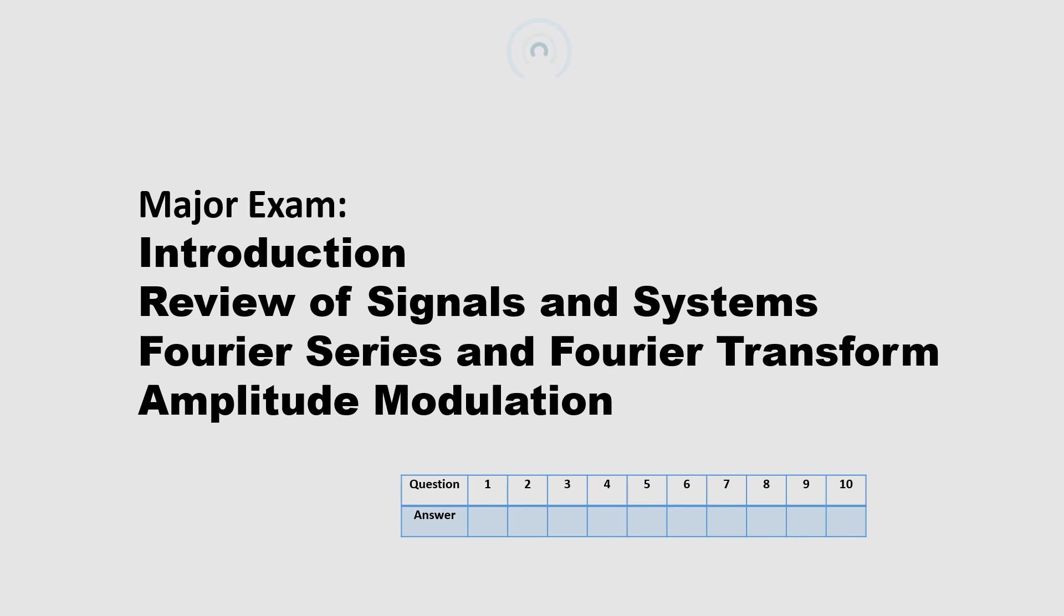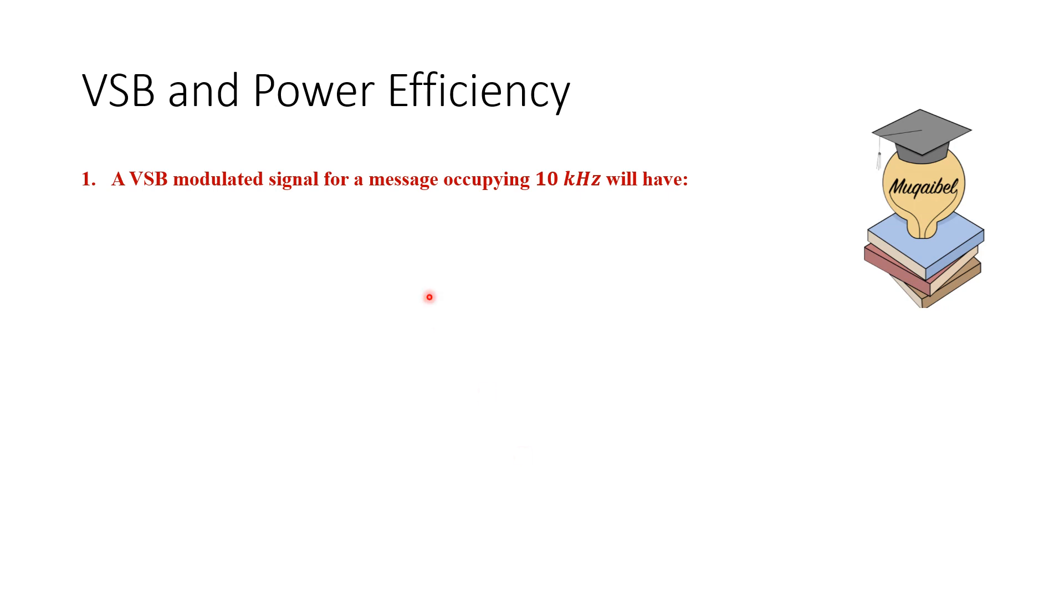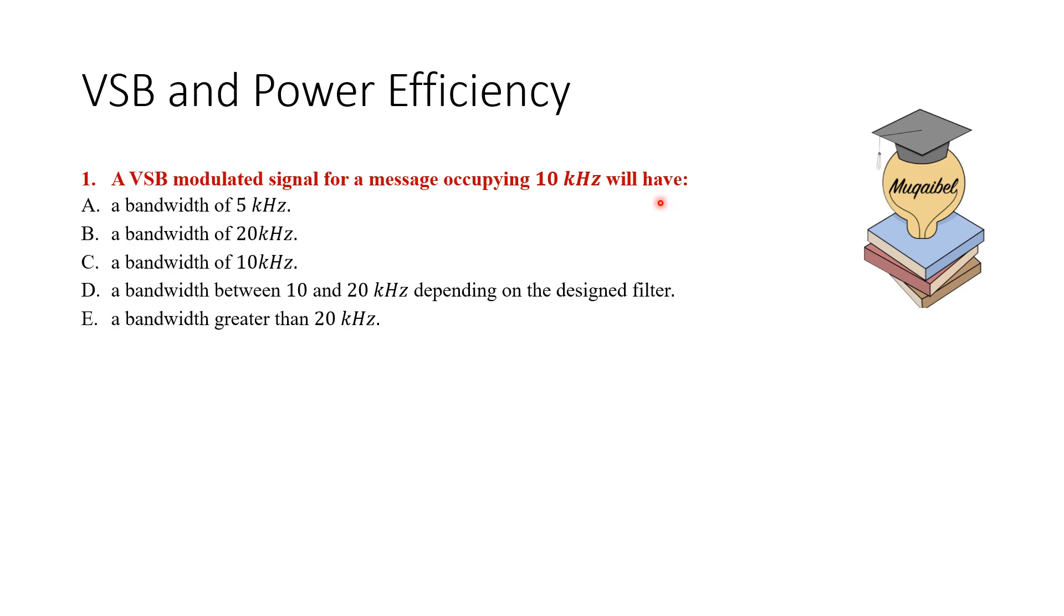The first question is about vestigial sideband and the second one is about power efficiency. A VSB modulated signal for a message occupying 10 kilohertz will have: a bandwidth of 5 kilohertz, 20 kilohertz, 10 kilohertz, between 10 and 20 kilohertz, or bandwidth greater than 20.